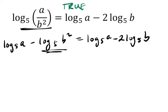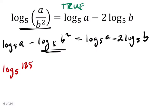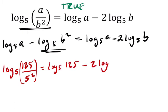If I was to try and figure it out using an example, I would do the log base 5 of, let's say, 125, right? That's 5 times 5 times 5, over b squared. Let's say that b is 5, so it would be 5 squared. They're saying that this should equal the log base 5 of 125 minus twice the log base 5 of 5.